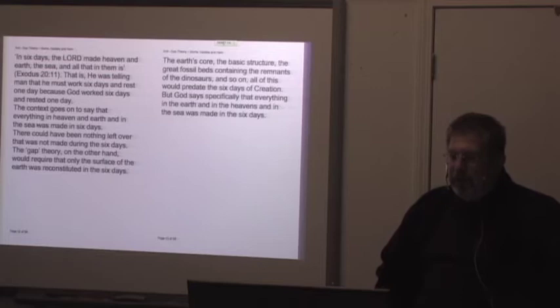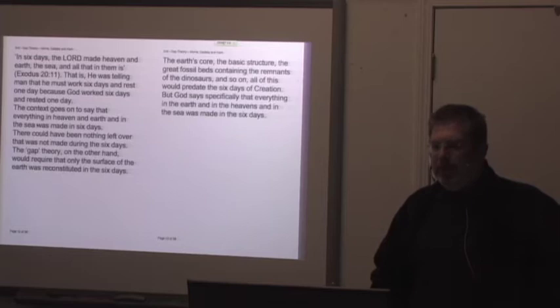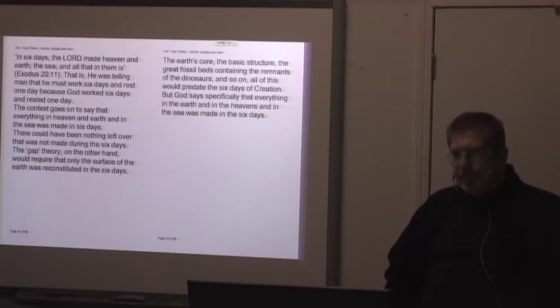That is, he was telling man that he must work six days and rest one day, because God worked six days and rested one day. The context goes on to say that everything in heaven and earth and in the sea was made in six days. There could have been nothing left over that was not made during the six days. The gap theory, on the other hand, would require that only the surface of the earth was reconstituted in the six days, i.e., God would have said, in six days the Lord reconstituted the heaven, the earth, the sea, and all that is in them. But he didn't say that, therefore it must all be the same. Okay, well the key here, and we'll see it later, is that the word made here is the same word that's used in Genesis for made, but it is not the word that is used for create.